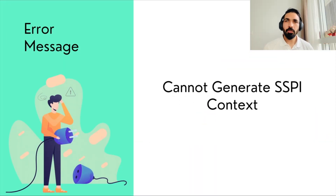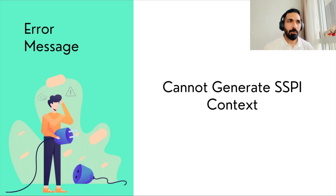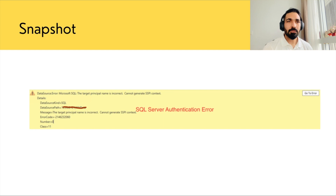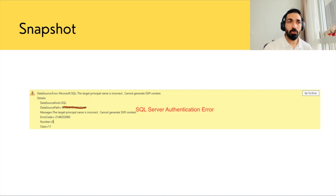Today when I was working on my Power BI data import from SQL Server, I got an error message which was saying: 'Cannot generate SSPI context.' This is the snapshot of that error message, which was saying the target principal name is incorrect — cannot generate SSPI context.